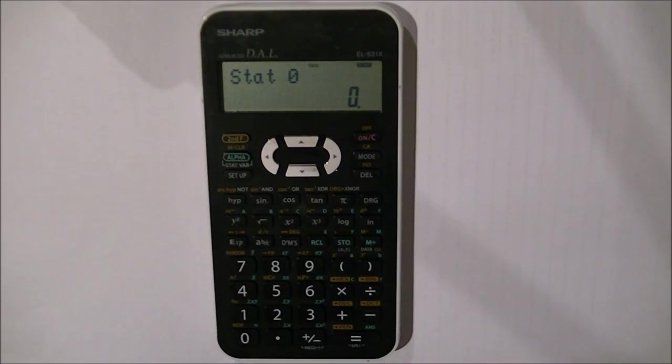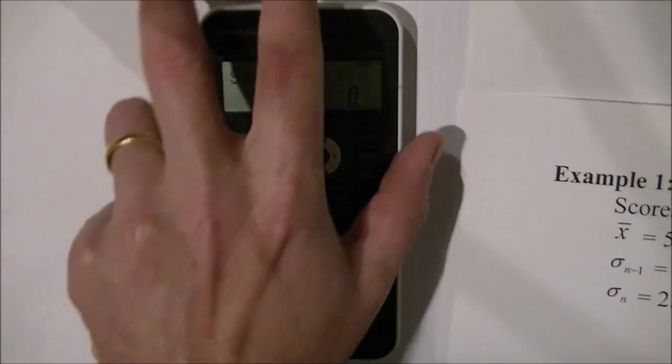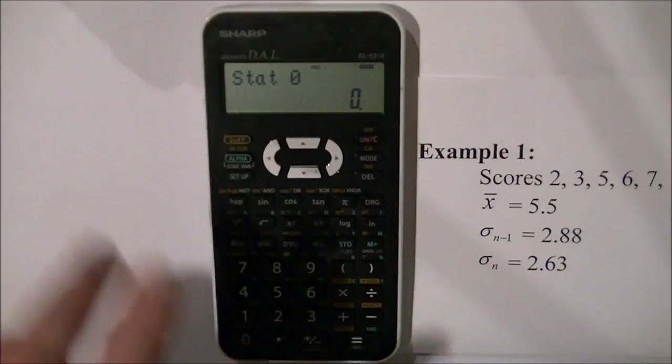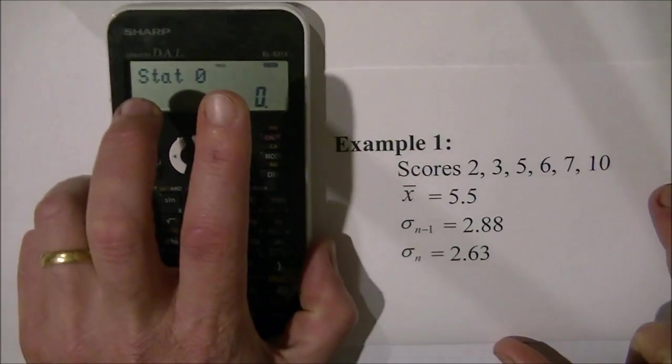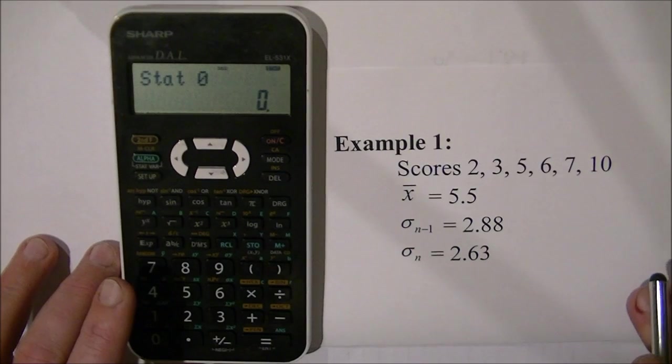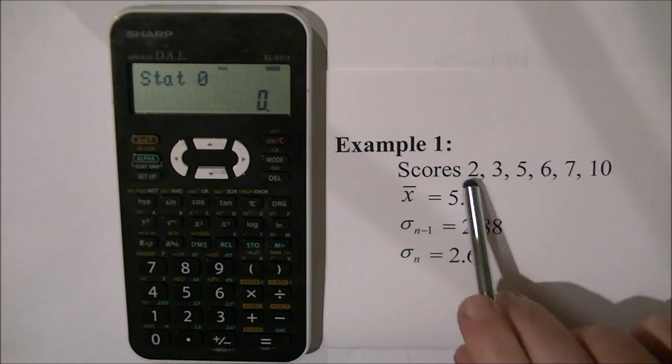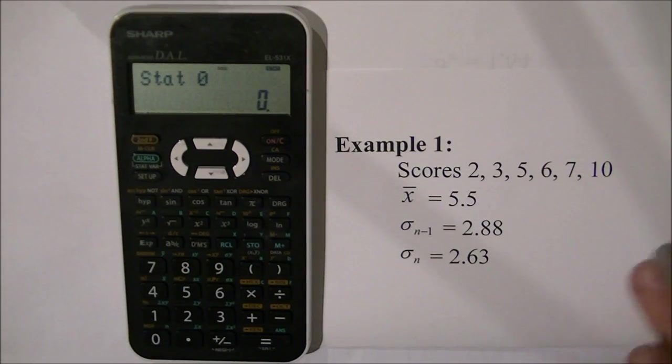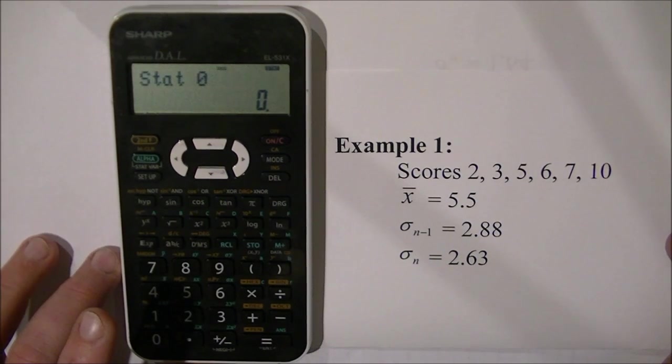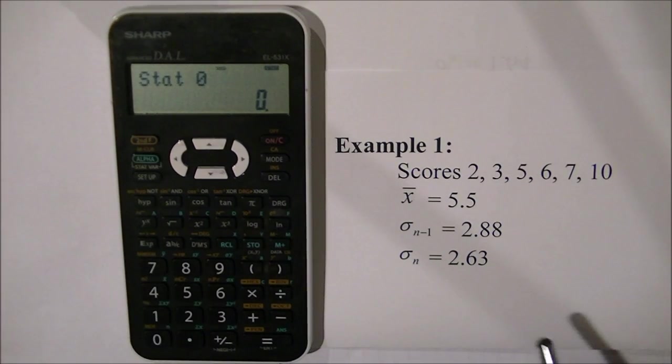Now I'm going to show you two examples. We're going to enter some scores into our calculator and do some statistics on them. This first example is going to take individual scores 2, 3, 5, 6, 7, and 10, and we're going to find the standard deviation, the mean, and the population deviation.